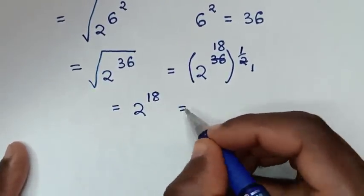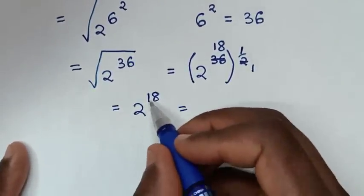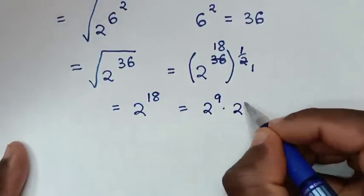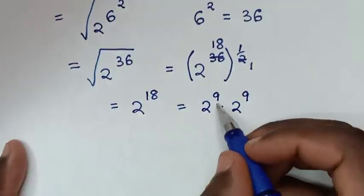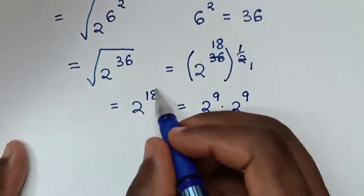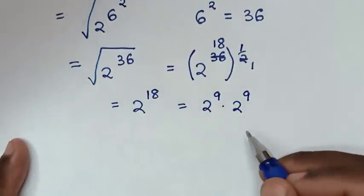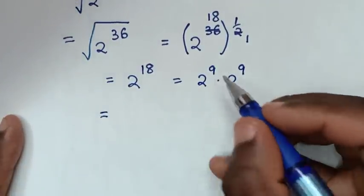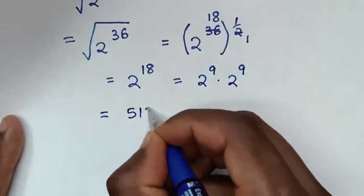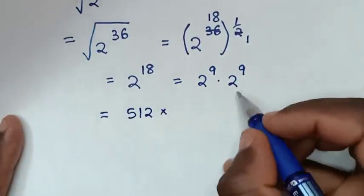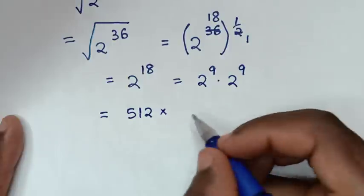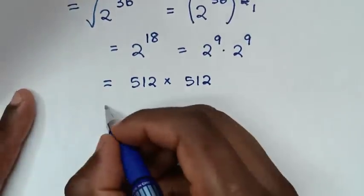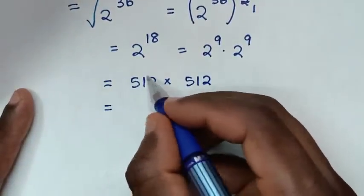Then 2 power of 18 is the same as 2 power of 9 times 2 power of 9, because power of 9 plus 9 is power of 18. Then 2 power of 9 is 512, times 2 power of 9 is 512, so we need to calculate 512 times 512.